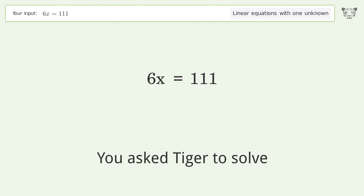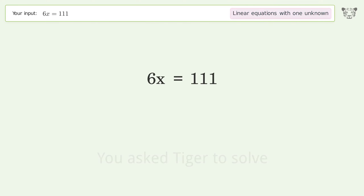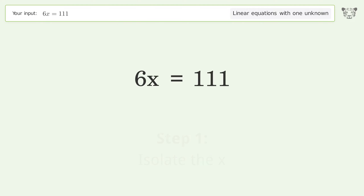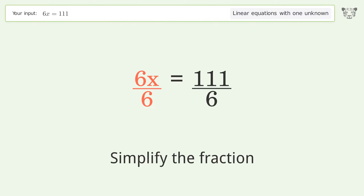Tiger Algebra solves this linear equation with one unknown. The final result is x equals 37 over 2. Let's solve it step by step: isolate the x, divide both sides by 6, and simplify the fraction.